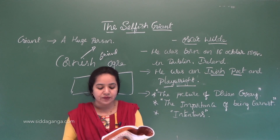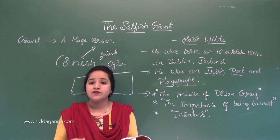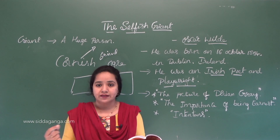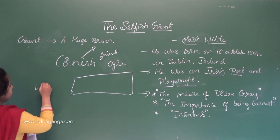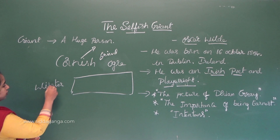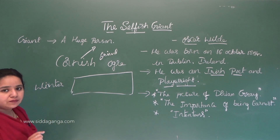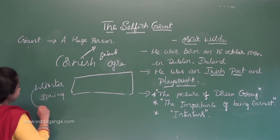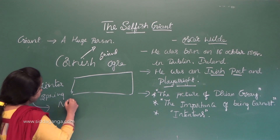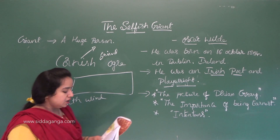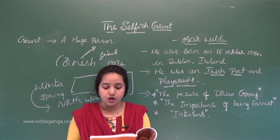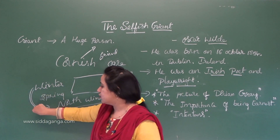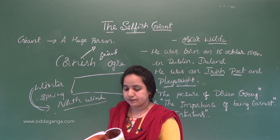Then they invited the north wind to stay with them, and he came. After the winter season, instead of spring arriving, the winter season invited the north wind. The north wind is comparing to 'he' in the text. The spring season had been skipped — it had not arrived. But this winter season called upon the north wind to stay, and the north wind came.